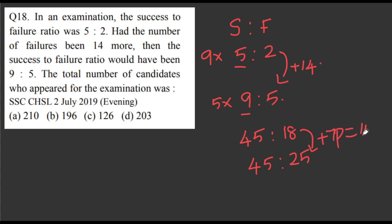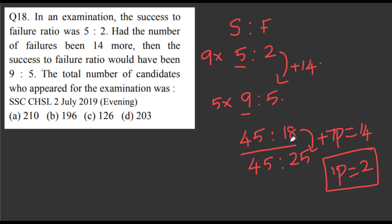So plus 7 parts is increased, and plus 7 parts equals 14. Therefore one part equals 2. Failure plus success gives total candidates — 45 plus 18 is 63 parts total. One part equals 2, so 63 parts equals 126. The answer is 126. If the success value is equal, we can add the failure to solve it easily.